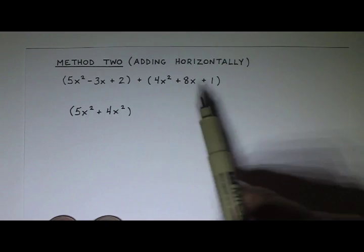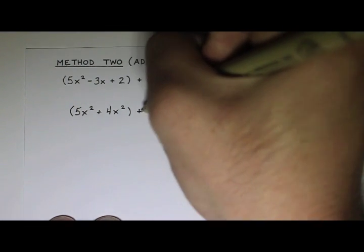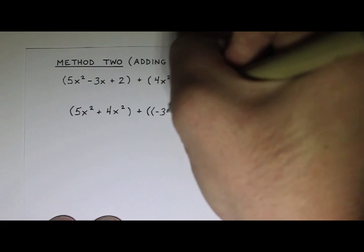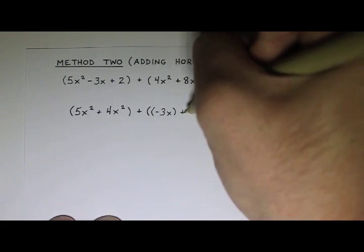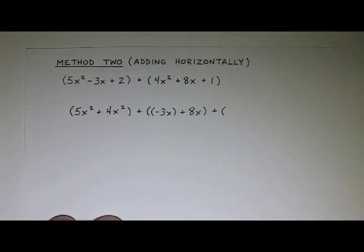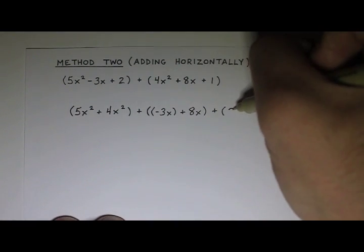And then I'm going to group together the x terms. So I have a negative 3x plus an 8x. And then I'm going to group together the constant terms. I have a 2 plus a 1.